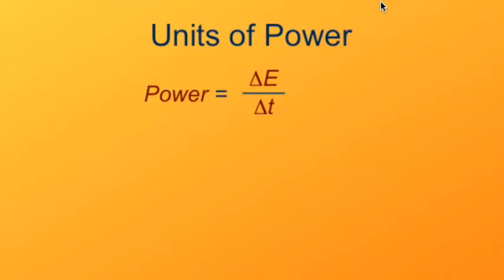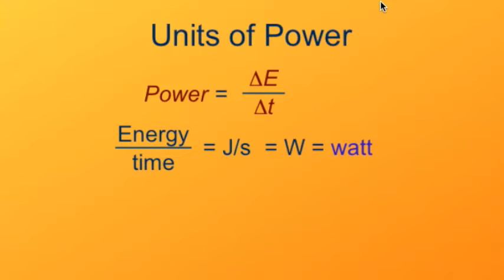The unit of power is simply energy unit divided by the time unit, so it's the joule per second. This comes up often enough in common parlance that we have named a unit for that that we use quite frequently. That's known as the Watt, abbreviation capital letter W.